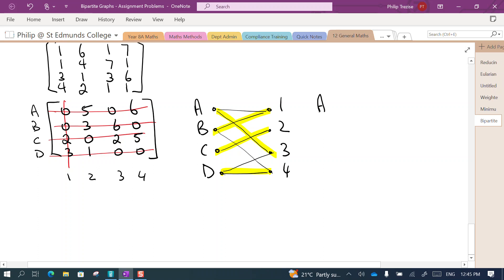We write this down by saying A is doing job number 3, B is doing job number 1, C is job number 2, and D is job number 4.